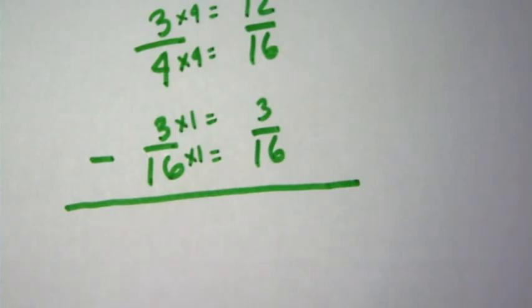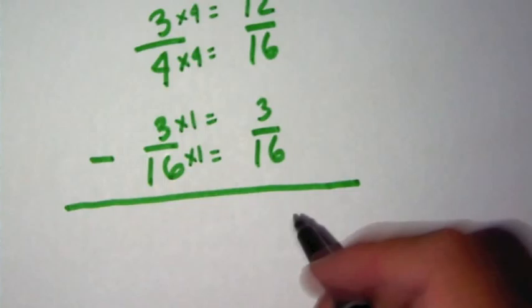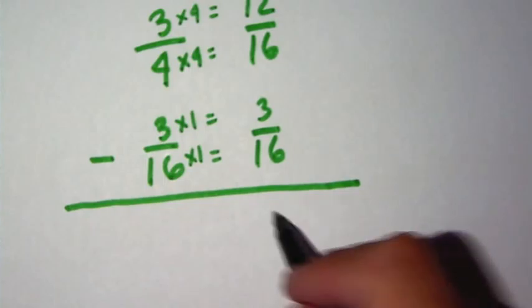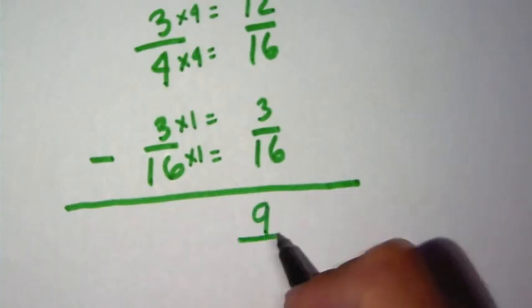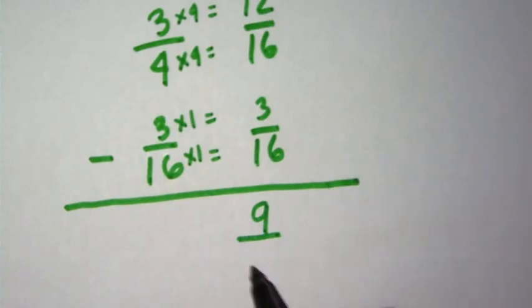12 minus 3 equals 9. My denominators are the same so I keep it the same. 9 over 16 is my final answer.